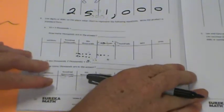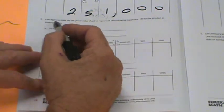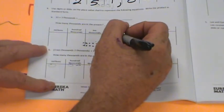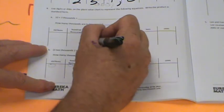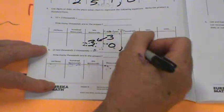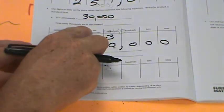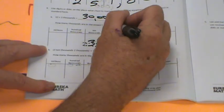Use digits or disk on the place value charts to represent the following equations. Write the product in standard form. So we're going to have ten times three thousands. Watch this trick. I'm going to go to the thousands column and put three here. And watch. We're multiplying by ten, so I'm just going to go like this. Zero, zero, zero, zero. One, two, three, comma. So our answer is thirty thousand. But then it says how many thousands are in the answer. Well, we have thirty thousands right there. Thirty.